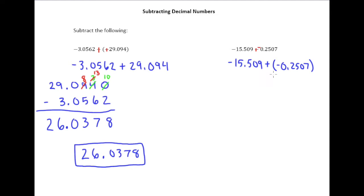And so since the signs are the same, we know we're adding these. So 15.509 plus, again we're going to line up the decimal points, 0.2507.